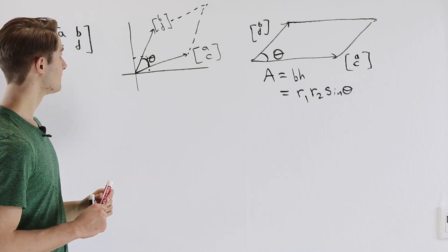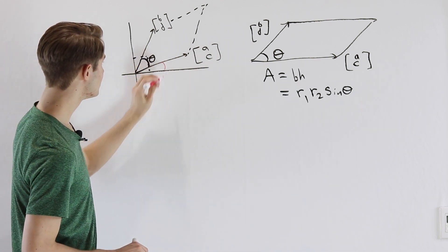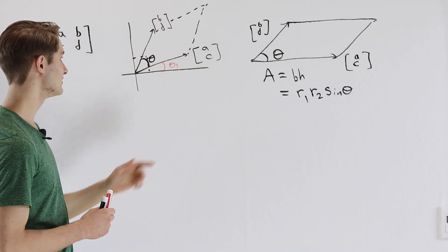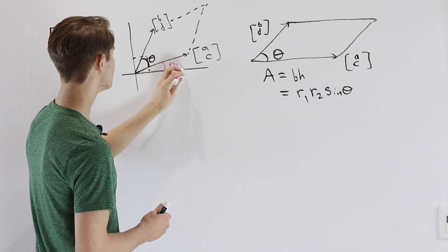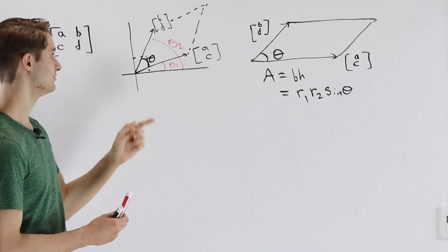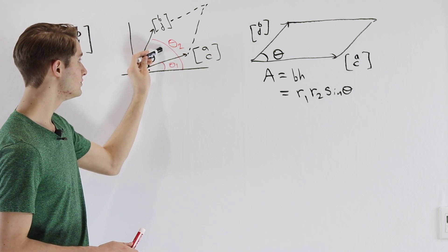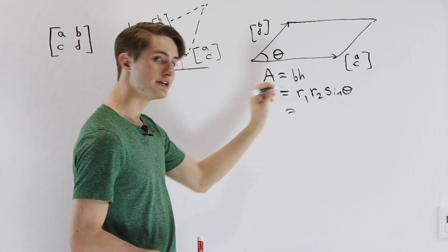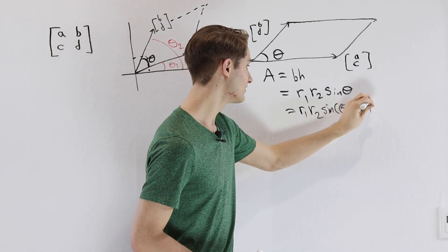To find theta, we look for angles we already know in this diagram. Because we know vector AC, we can find theta1 — the angle upward from the x-axis of the first vector. Similarly, because we know vector BD, we can find theta2 — the angle from the x-axis of the second vector. The theta value we want is actually theta2 minus theta1, the difference between those two angles. So our final area formula is R1·R2 times the sine of (theta2 - theta1).